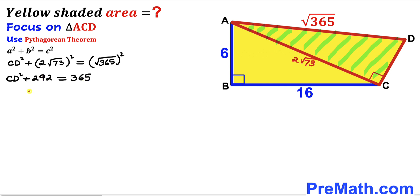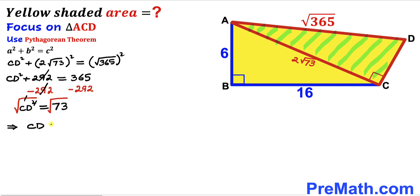Subtracting 292 from both sides, the 292 and −292 cancel, so CD² = 73. Taking the square root on both sides, the square and square root cancel, giving us side length CD = √73 units.